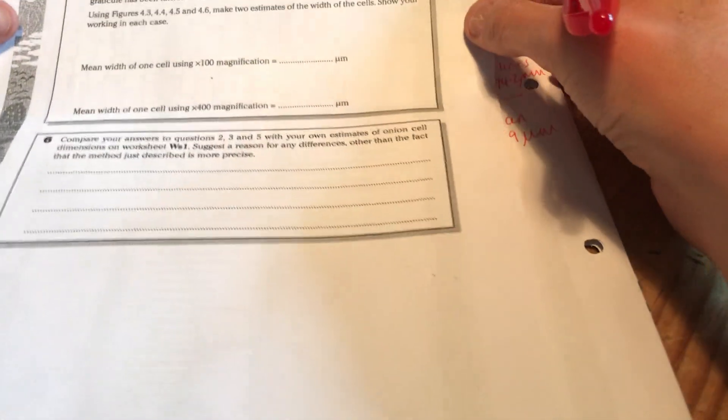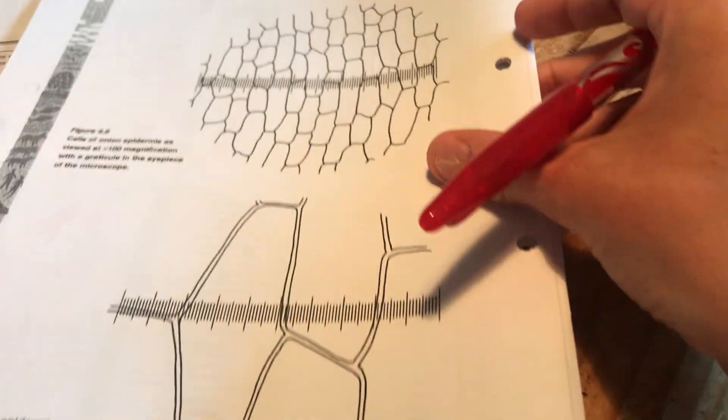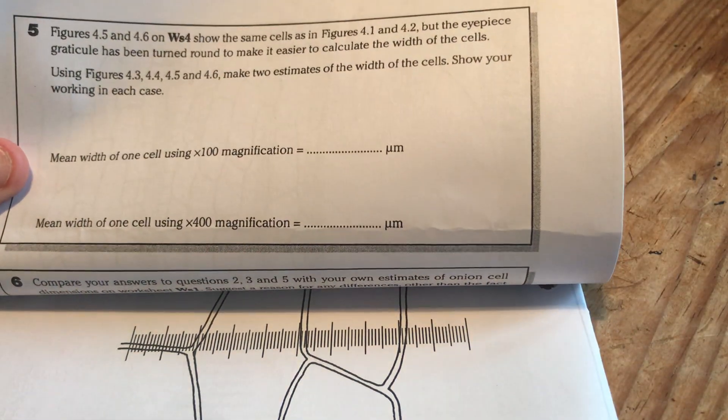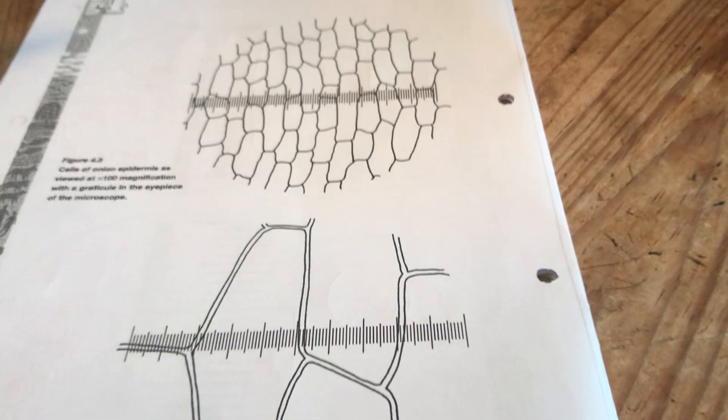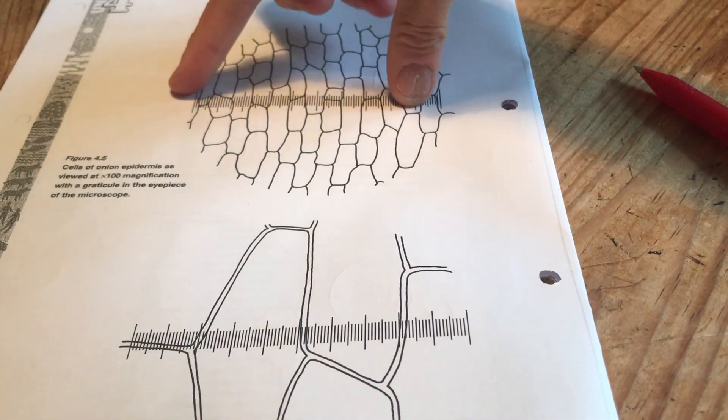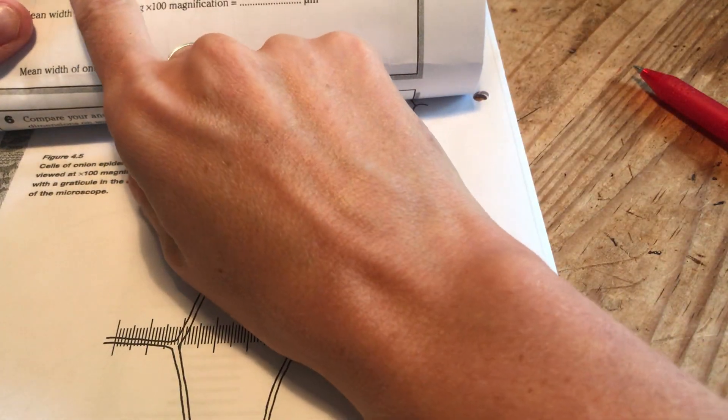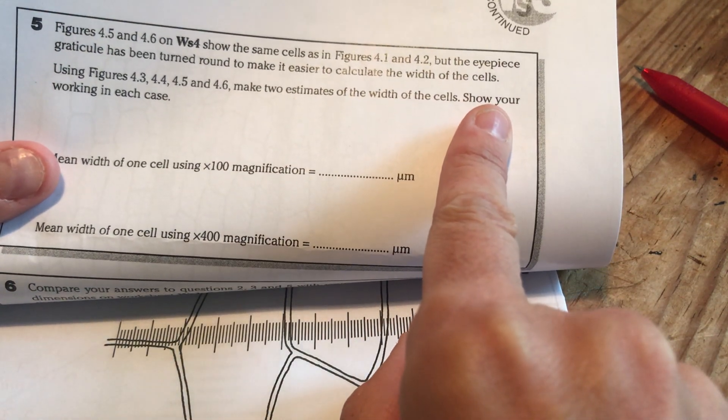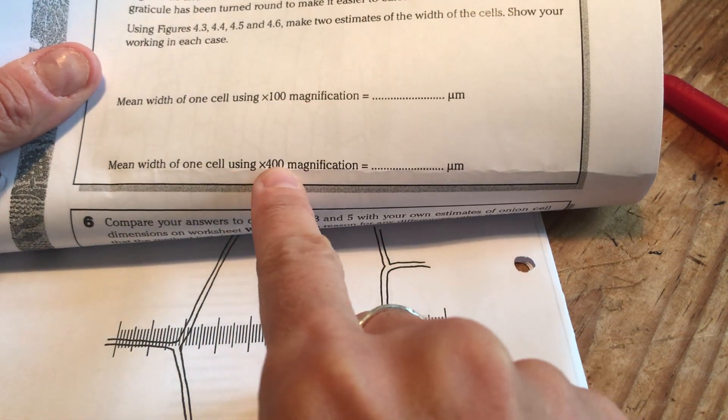Right, let's have a look. Figures 5.5 and 5.6. There we go. Figures 5.5 and 5.6 on Worksheet 4 show the same cells, as in figure 1 and 2, but the eyepiece graticule has been turned around so we can do the width of the cells instead of the length. The eyepiece graticule last time was that way round, wasn't it? Using figures 4.3, 4.5 and 5.6 make two estimates of the width of the cells. Show your working in each case.